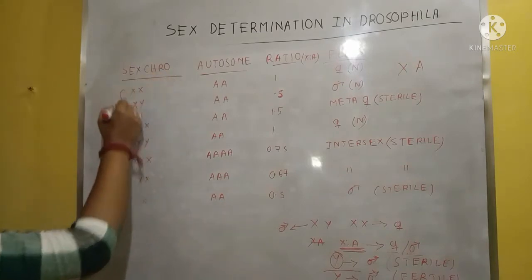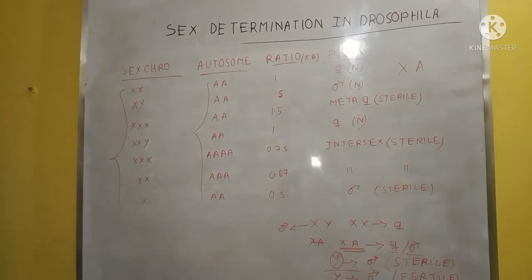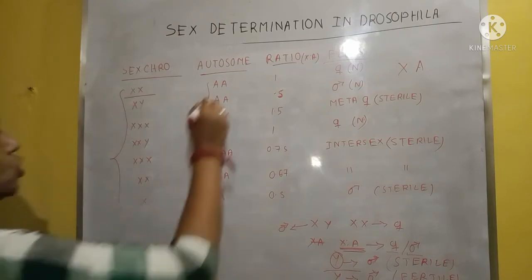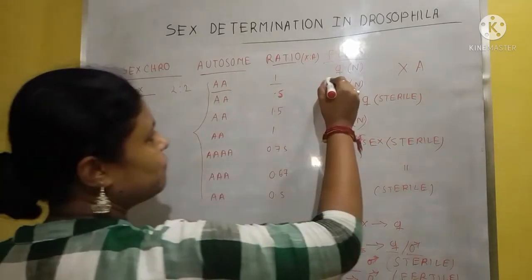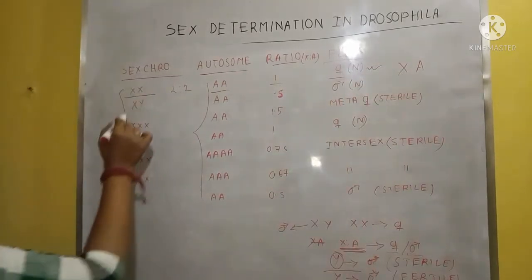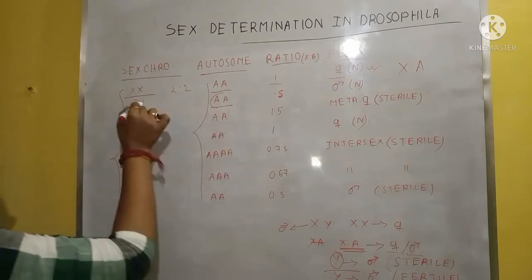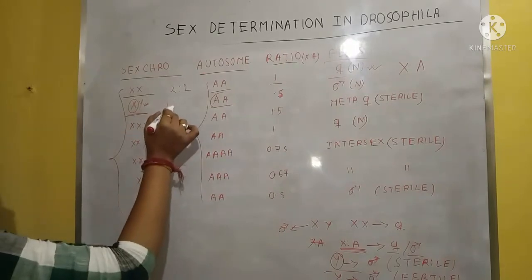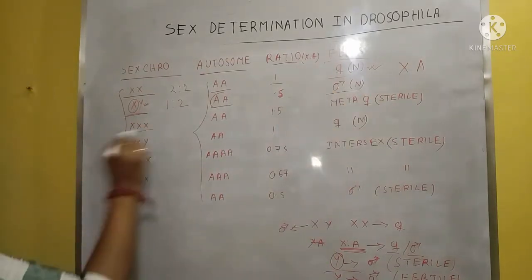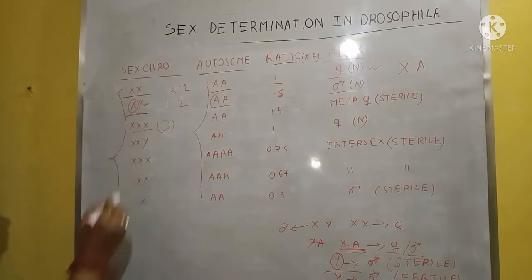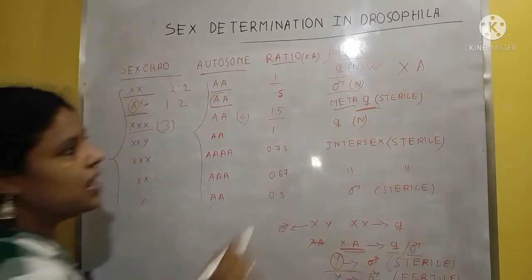These are all the sex chromosomes (X chromosome) and these are all the autosomes. When there are 2 X chromosomes and 2 autosomes, the ratio is 2:2, which equals 1. When the ratio is 1, it denotes a normal female. When the ratio is 3 X chromosomes to 2 autosomes, the ratio is 1.5 — this is a metafemale or super female, but it is sterile.